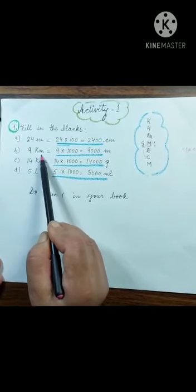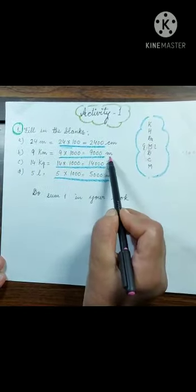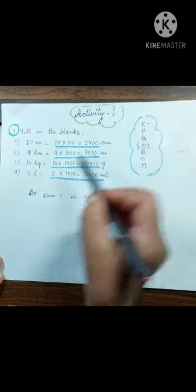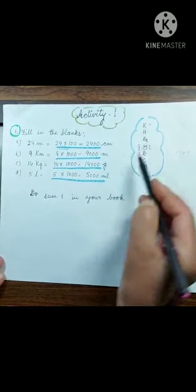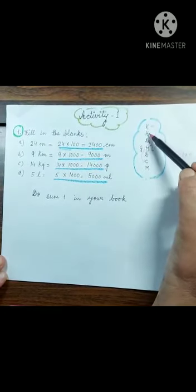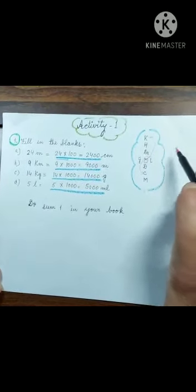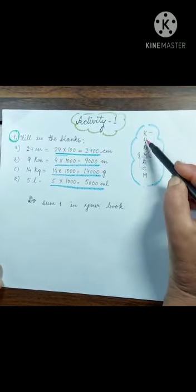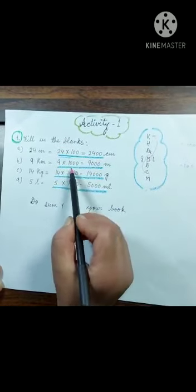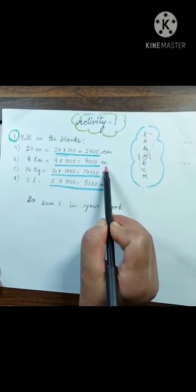9 kilometers given, convert to meters. Kilometer is here, meter is three steps down — bigger to smaller, multiply. Three steps means multiply by 1000. So 9 multiplied by 1000 equals 9000 meters.